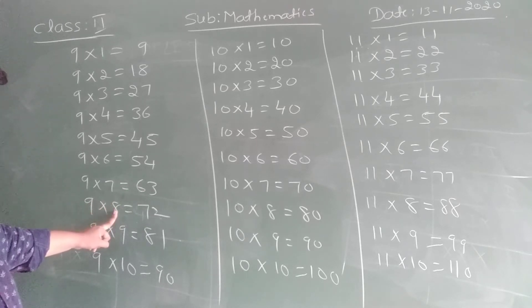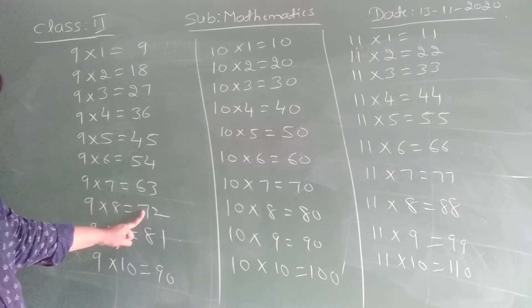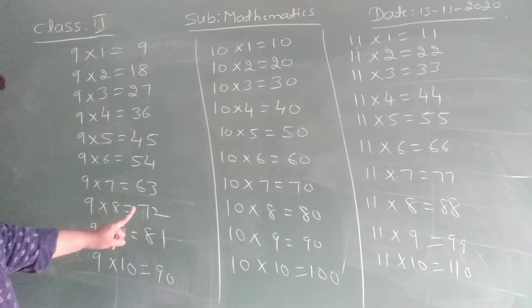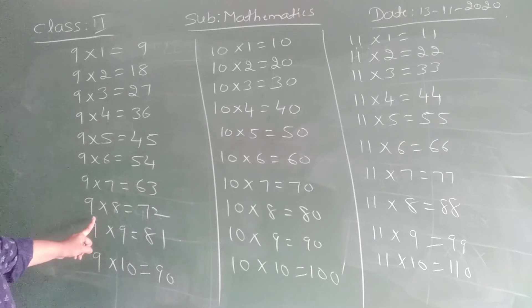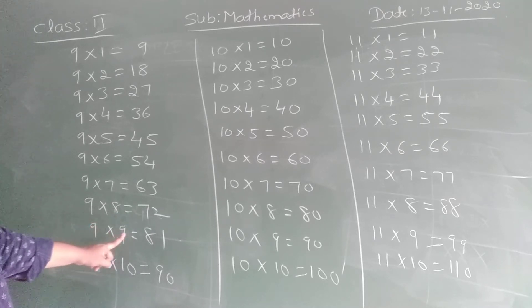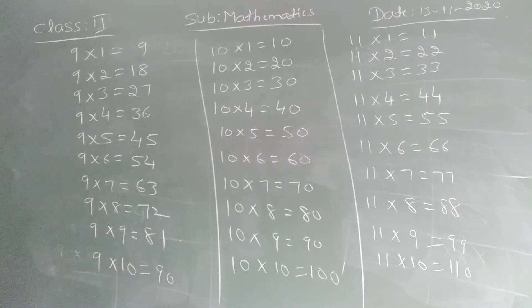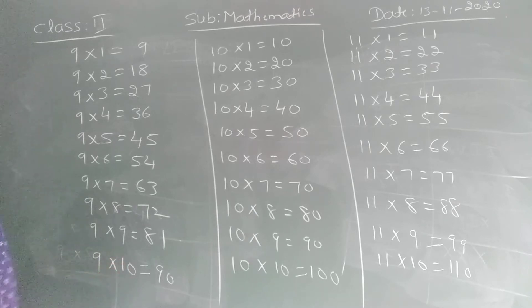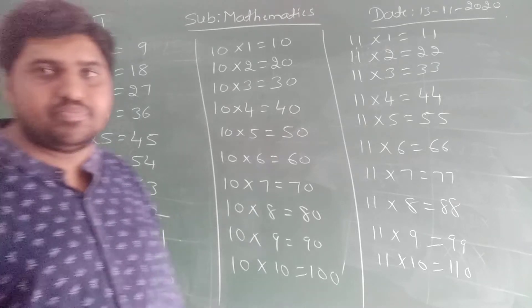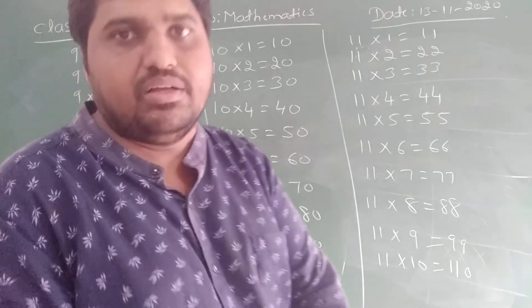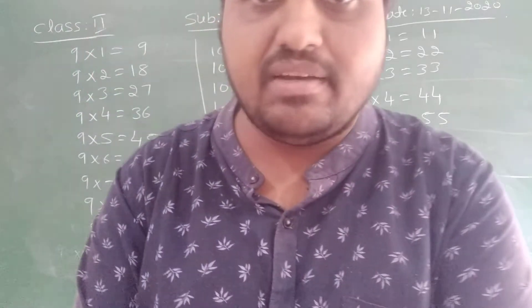9, 8 is 72. 9, 9 is 81. 9, 10 is 90. Okay children?